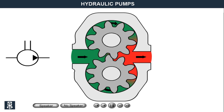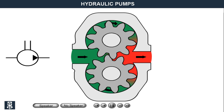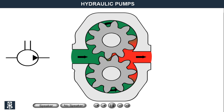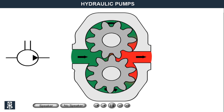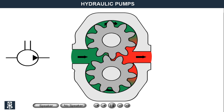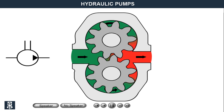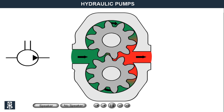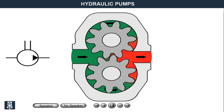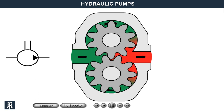Gear pumps are characterised by being quite insensitive to impurities, can be run with thin flowing oil, have a low price, and have fixed displacement.